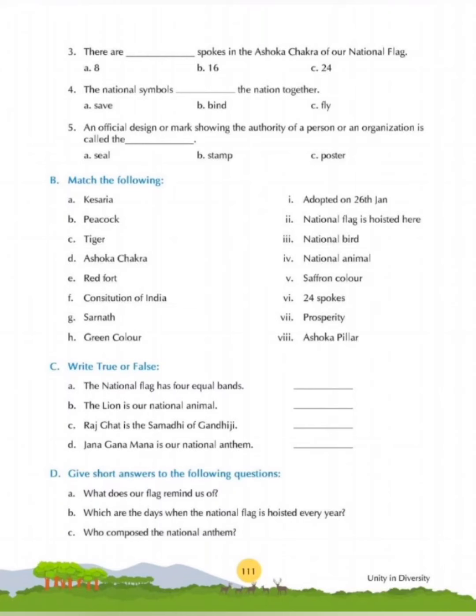Question 3: There are dashed spokes in the Ashoka Chakra of our national flag. The answer is 24. There are 24 spokes in the Ashoka Chakra of our national flag, and these 24 spokes represent 24 hours in a day.